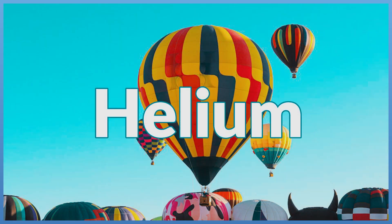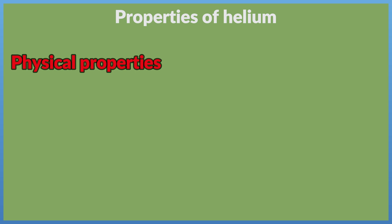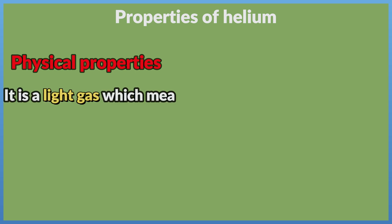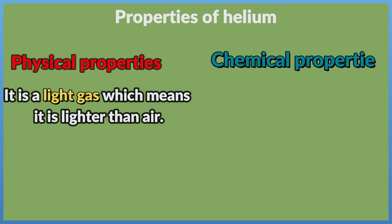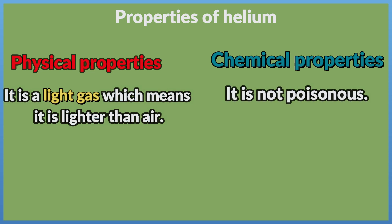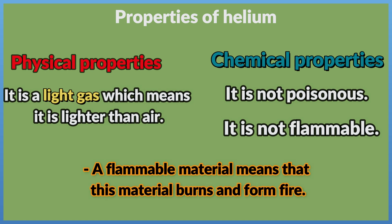Helium. Physical Properties: It is a light gas, which means it is lighter than air. Chemical Properties: It is not poisonous. It is not flammable. A flammable material means that this material burns and forms fire.